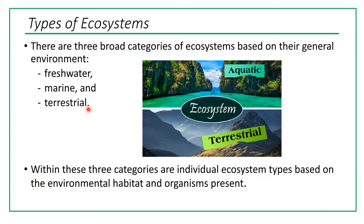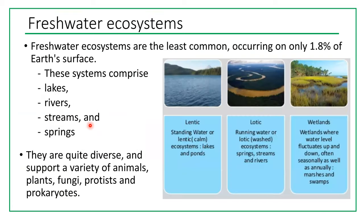Freshwater ecosystems are the least common, occurring on only 1.8 percent of Earth's surface. They include lakes, rivers, streams, and springs. They're quite diverse and support a variety of animals, plants, fungi, protists, and prokaryotes. Freshwater ecosystems include lentic ecosystems — standing water — lotic ecosystems such as springs, streams, and rivers, and wetlands where water level fluctuates seasonally, including marshes and swamps.